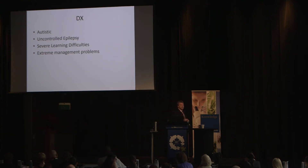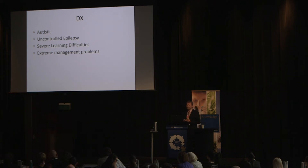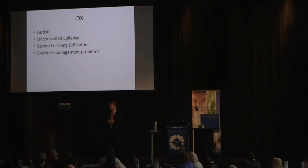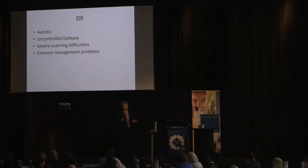The diagnosis he received was autism with uncontrolled epilepsy, severe learning difficulties, and extreme management problems — such that Great Ormond Street had initiated a claim to extract the child from the family, in part because the marriage was failing rapidly in the face of extreme difficulty looking after a child who had no day in the previous year in which he did not display excessively unpleasant behavior patterns.